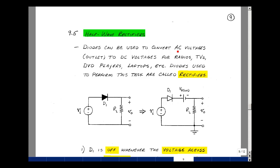Diodes can be used to convert AC voltages, this would be the wall outlet, into DC voltages for use with radios, TVs, DVD players, laptops, smartphones, electric drills, and so on. Diodes that are used to perform this task are called rectifiers.